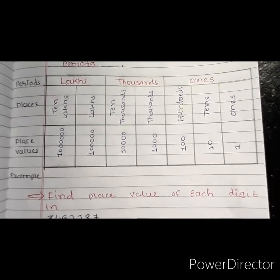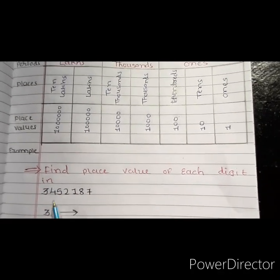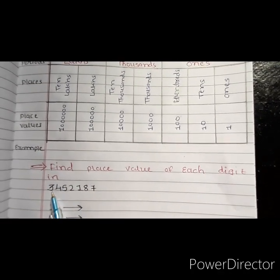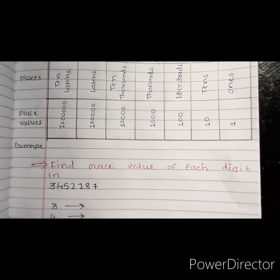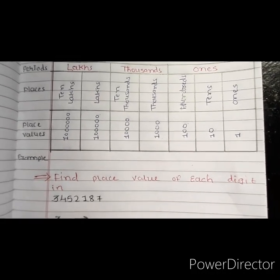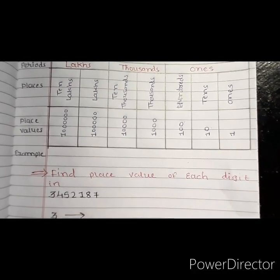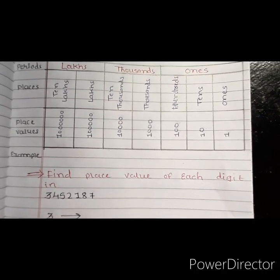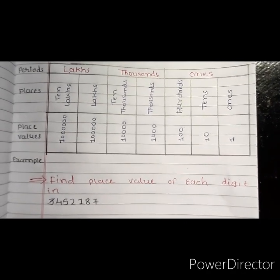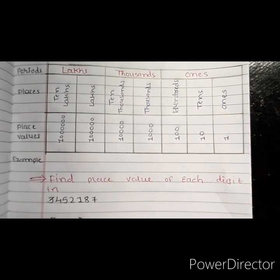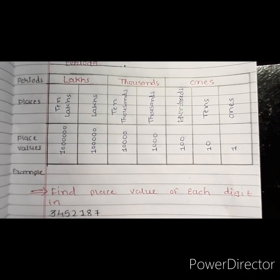So let's take an example. If we take the number 34,52,187 — can we read it easily? Is it 34,000 or 3,45,000? We can't read it easily. For that, we have to learn the place value chart. And students, this is a very important topic. You have to remember this place value chart.